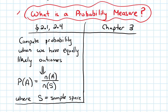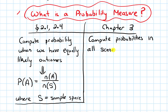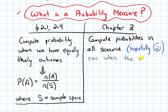So in this chapter, chapter 3, we are now going to try to compute probabilities in all scenarios — as many scenarios as we can — even when the outcomes are not equally likely.